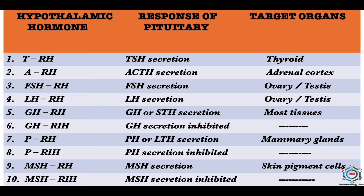The hypothalamic hormones and their responses include: thyrotropic releasing hormone, which stimulates TSH secretion from the pituitary, activating the thyroid gland to release hormones; adrenocorticotropin releasing hormone, which stimulates adrenocorticotropic hormone secretion in the pituitary, activating the adrenal cortex; and follicle-stimulating hormone releasing hormone, which stimulates FSH secretion in the pituitary, activating the ovaries and testes.